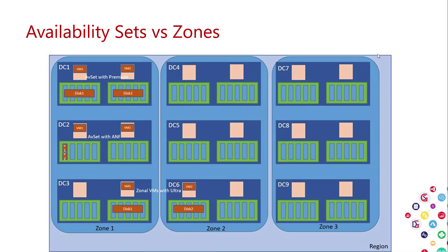Some concepts to know about availability within Azure VM data centers: with an availability set and premium storage, each disk is striped across multiple machines within the same rack. An availability set will be all within the same data center. With Azure Native Files (ANF), you can have both VMs sharing one storage on the same rack.